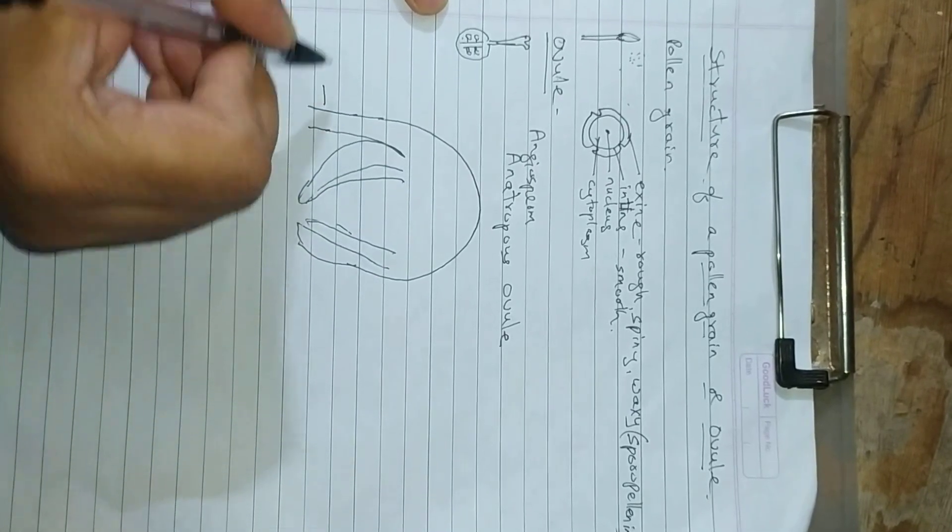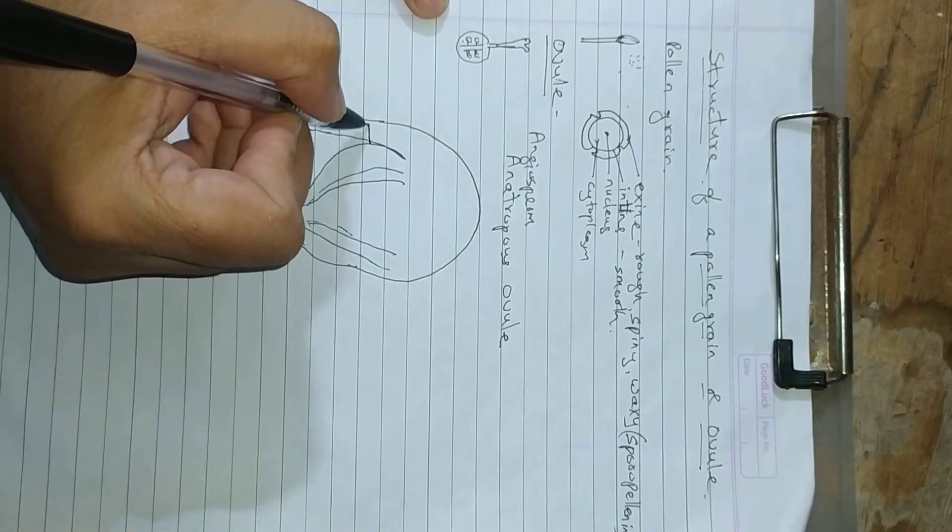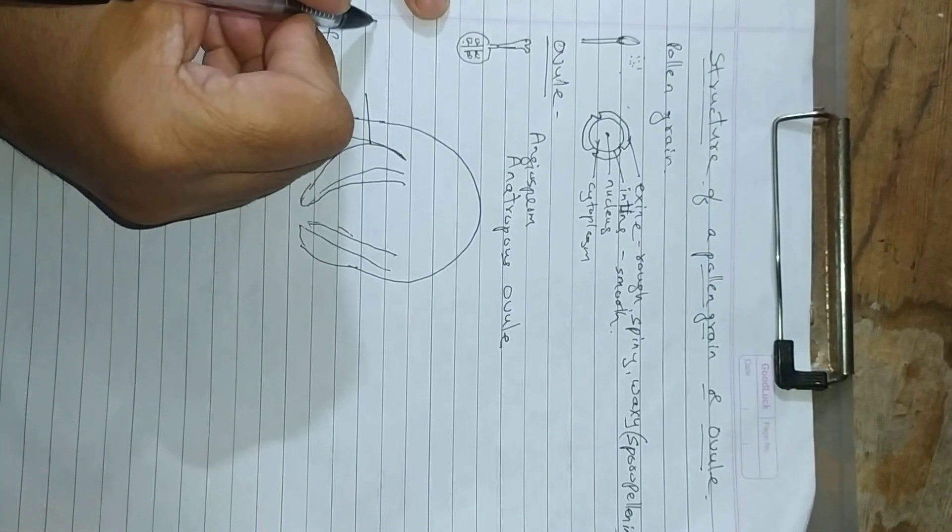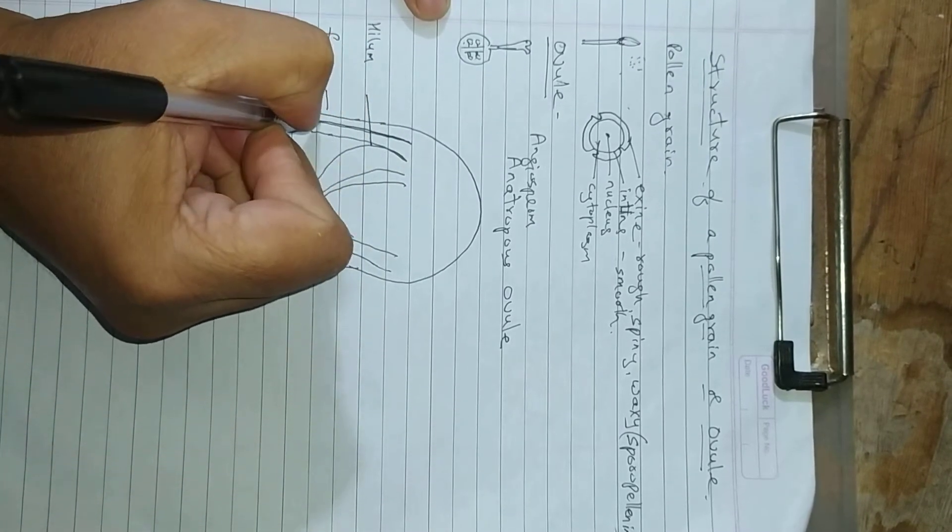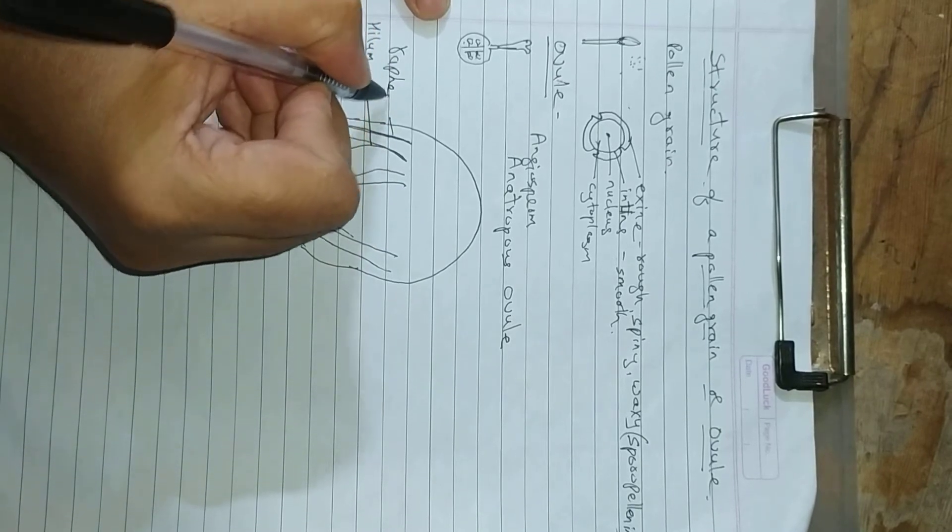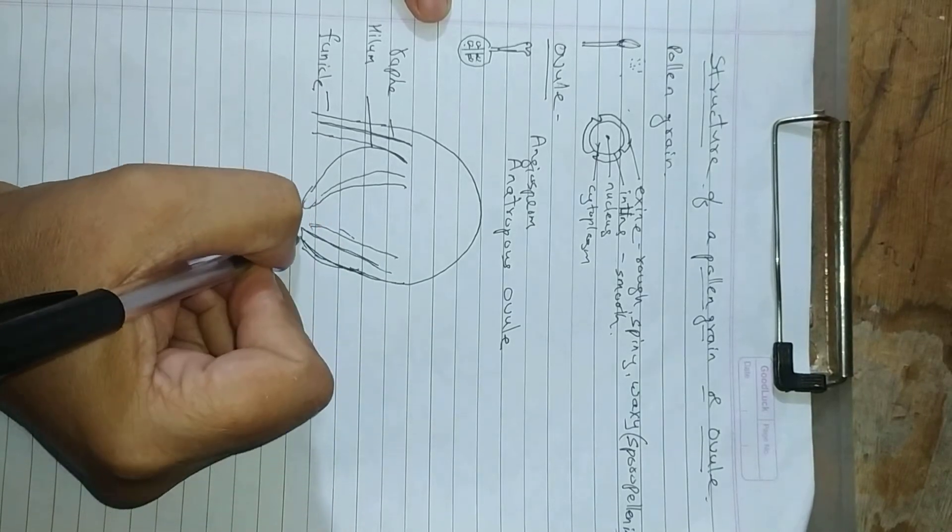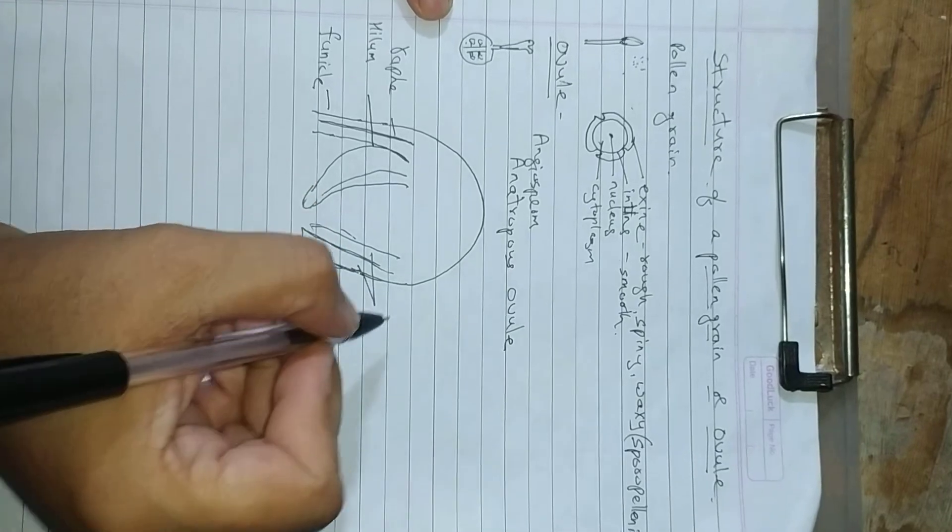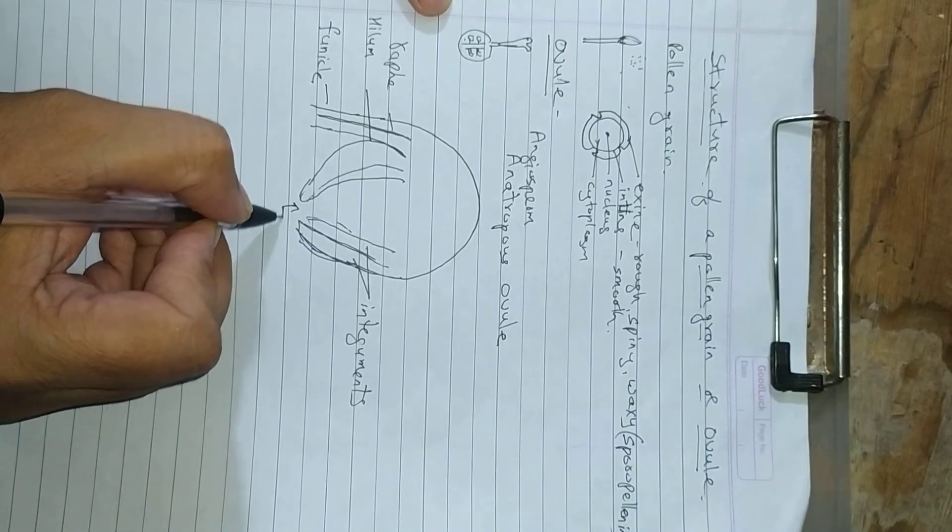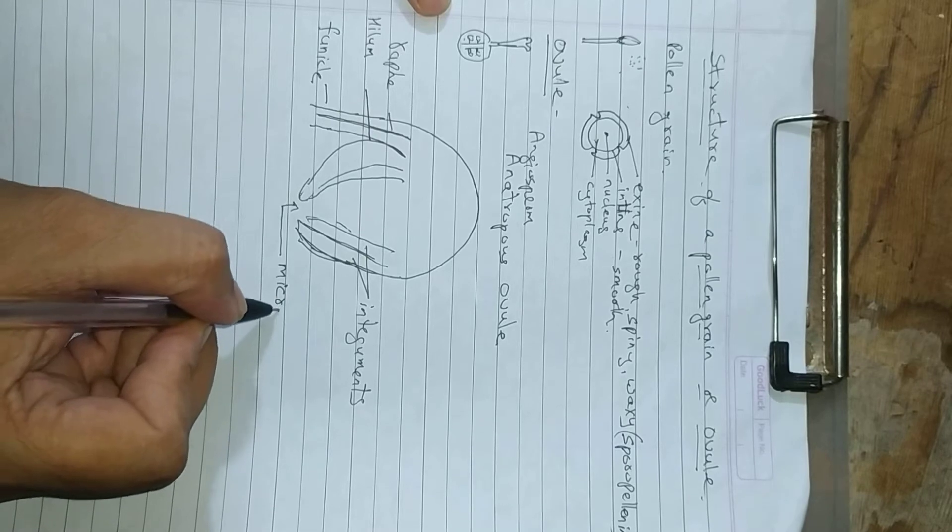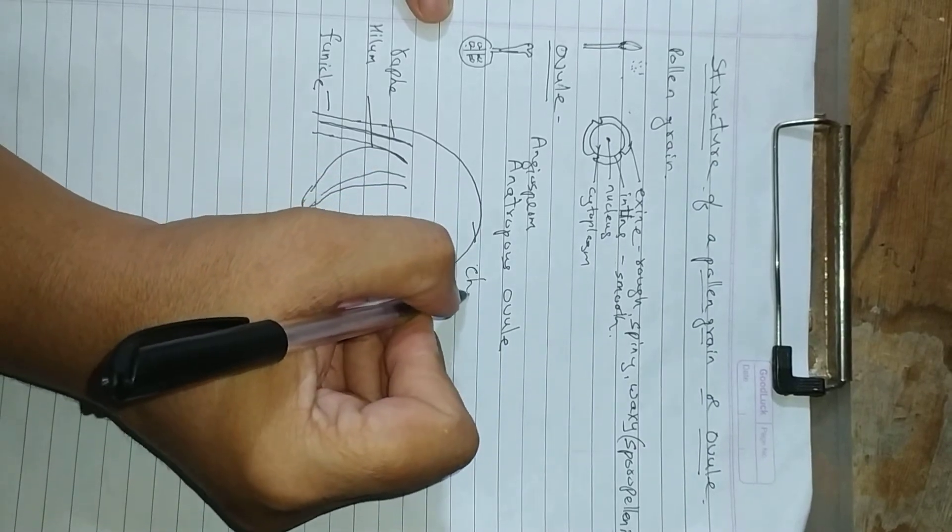This stalk is called as funicle. The attachment of the ovary to the ovule is called as hilum. And there is a dark structure called as raphe. This structure has outermost two-layer structure. These two layers are called as integuments. The opening at the lower end is called as micropyle. Opposite to the micropyle is the chalaza.